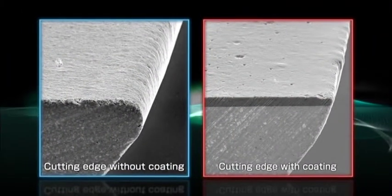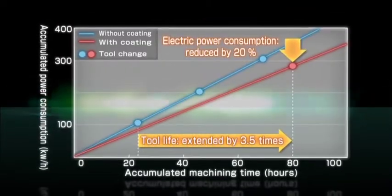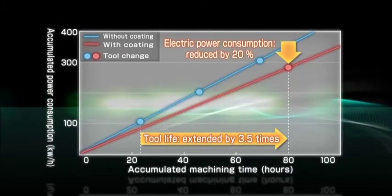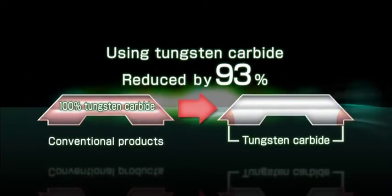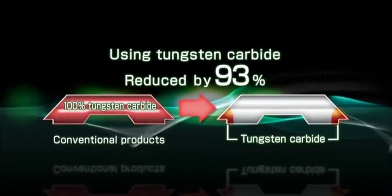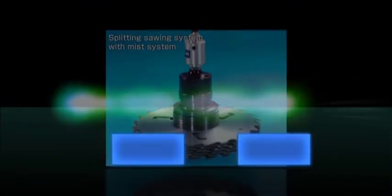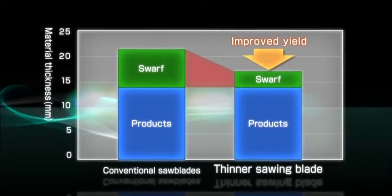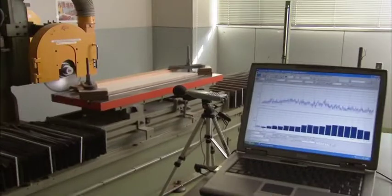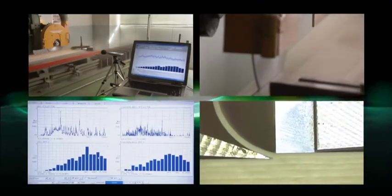Coating technology enables energy savings. Micro-tipping technology reduces usage of rare metals. Thinner saw blade technology enables better yield. Lower cutting and machine noise improves working environment.